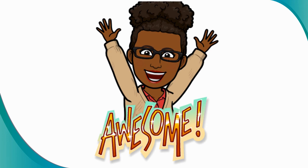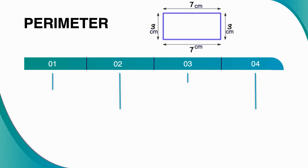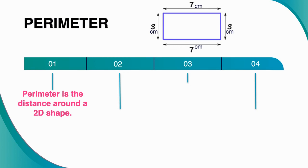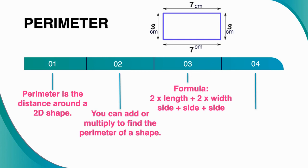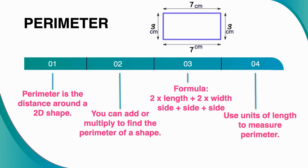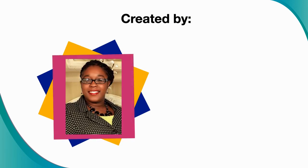Let's do a quick review. The perimeter is the distance around a 2D shape. To find the perimeter, you can add or multiply. The formula is P = 2 × length + 2 × width, or you can add all the sides together — it depends on how many sides there are. We use units of length to measure perimeter. This lesson was created by Miss Antonia B.